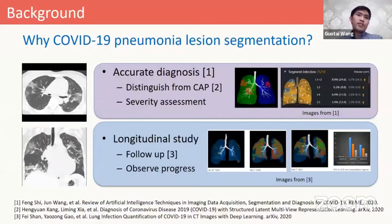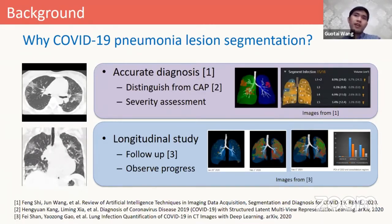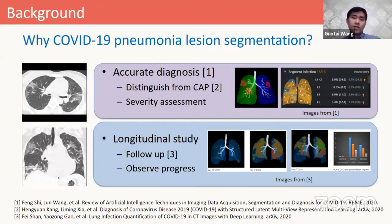CT images are very important for understanding how the lung is affected by the virus. The segmentation result can help us know some quantitative measurements such as the volume, the shape, and spatial distribution of the lesions, which can be used for aided diagnosis. The segmentation volume in different lung segments are very important features for distinguishing COVID-19 from community-acquired pneumonia, and these features are also important for severity assessment as well as longitudinal study and follow-up. If we segment the lesions in the lung lobes at different time stages, we can observe how the disease progresses and even predict the outcome of a patient.